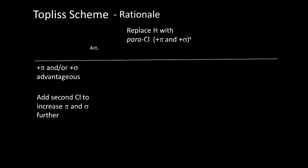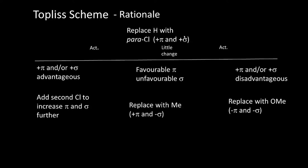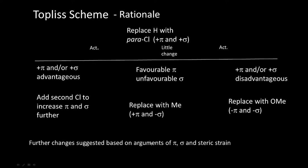What is the rationale here? We are changing phi (hydrophobicity) and or sigma (electronic). If activity increases, there is little change or a plus phi and/or plus sigma effect. We then add a second chlorine to increase phi and sigma further. Replacing with methyl gives minus sigma but maintains plus phi. Replacing with O-methyl gives both minus phi and minus sigma. This is the logic by which changes are made, once you start with para-chloro and see what is happening.